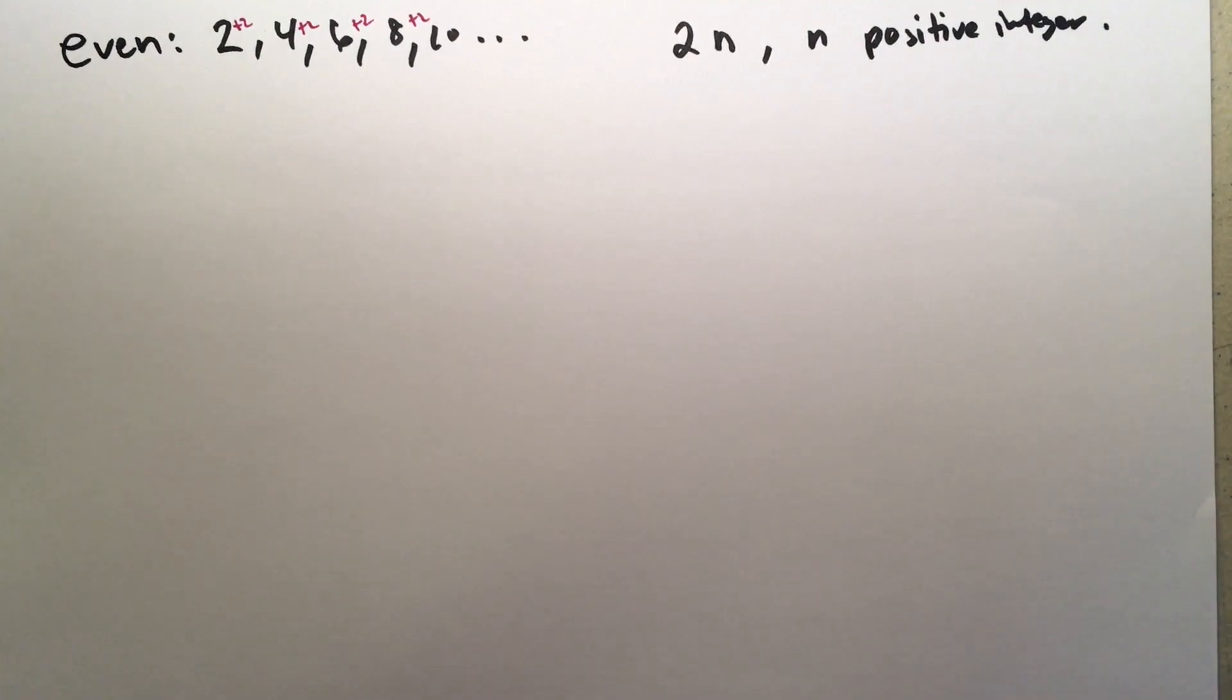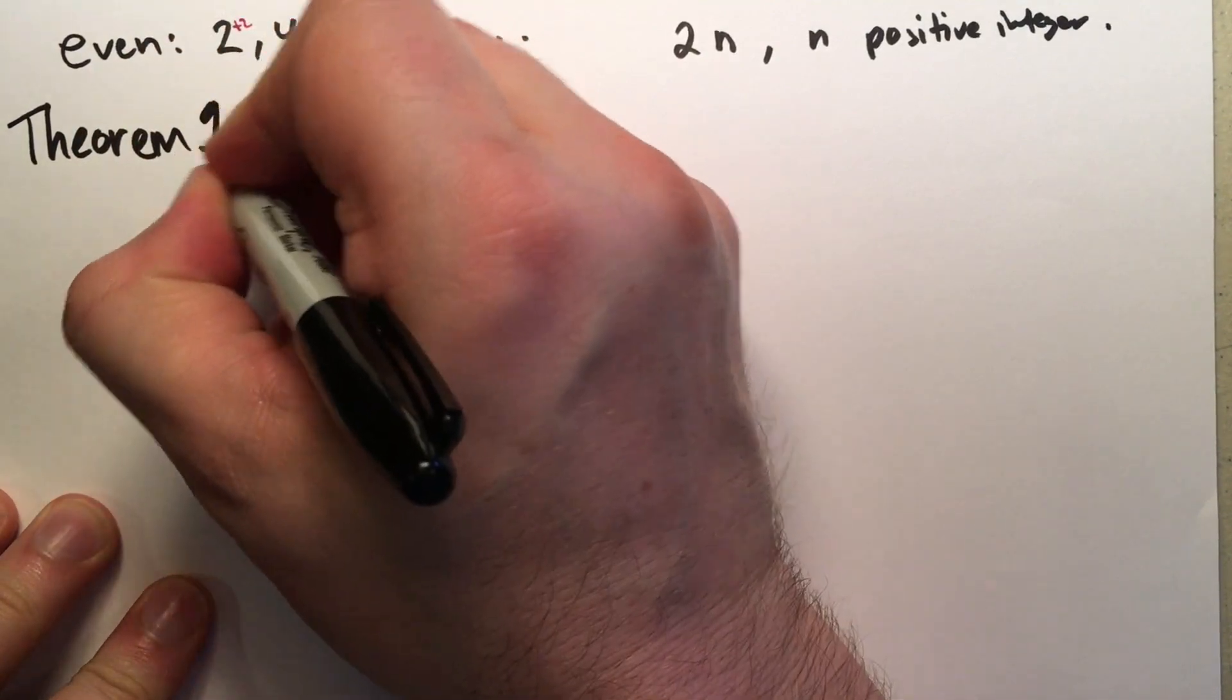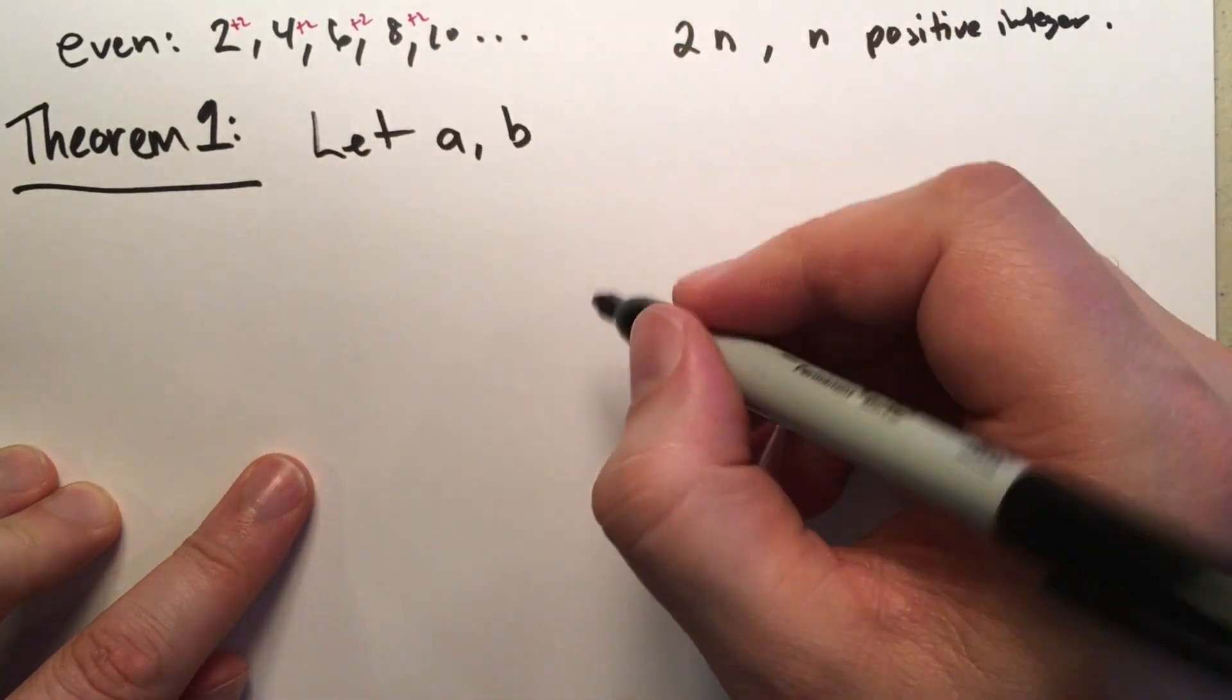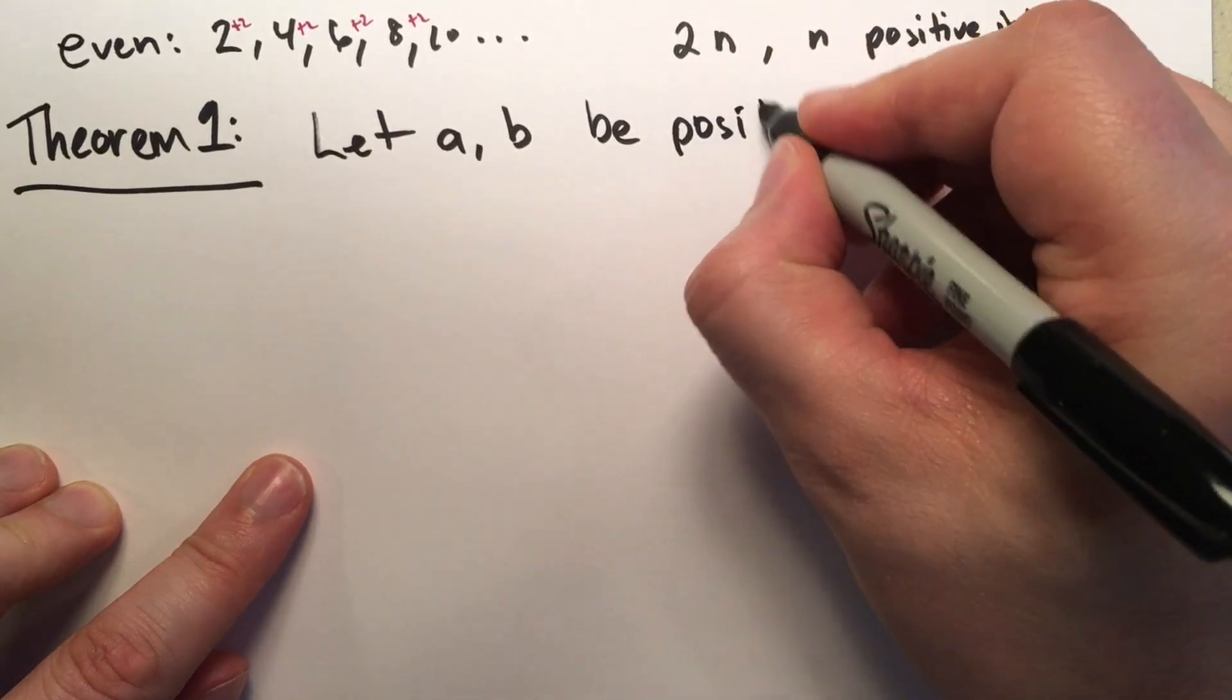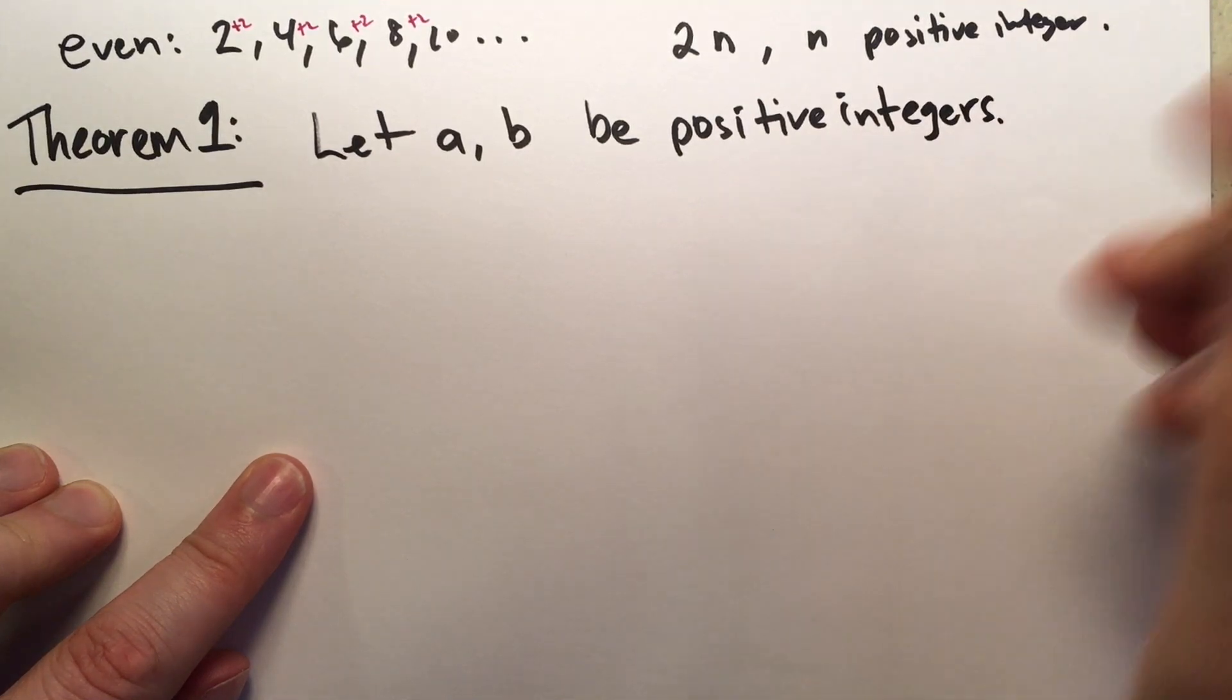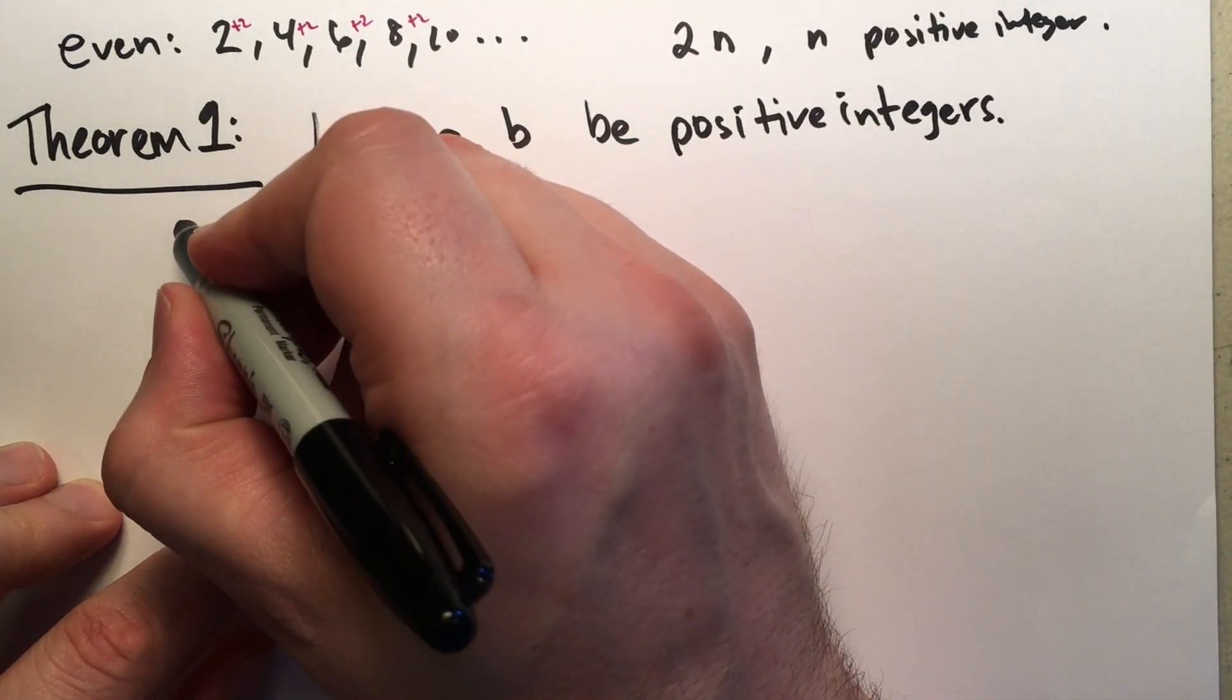So, let's continue right along here. Theorem 1. This says, let A and B be positive integers. With every theorem, you have to be specific about what the variables are.